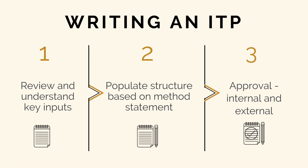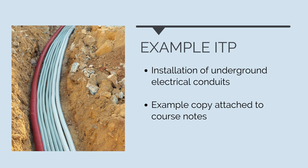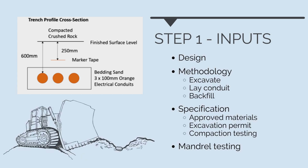We'll now go through these steps in detail by drafting an example inspection and test plan. The example ITP we're going to create will be for the installation of underground electrical conduits — basically buried pipe that electricians run cables through to reticulate power or feed assets like street lighting. I've attached a copy of the example ITP to the course notes so you can follow along. Our first step is to review and understand the key inputs. Our design shows a trench alignment — where the conduit route goes — and a trench profile cross section showing the trench profile, depth of cover, backfill material, and marker tape.